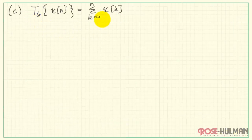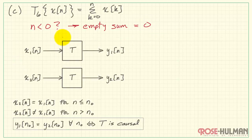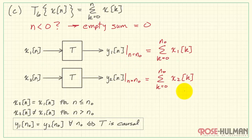Here's our third system, T6. It's based on the sum of k equals 0 to n of the inputs x of k. I need to point out that when n is less than 0, that we have an empty summation, and that gives us a result of 0. There potentially could be other interpretations for that, but that's what we're going to use here.